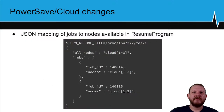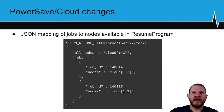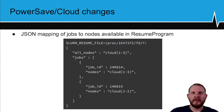We've also added a SLURM_RESUME_FILE environment variable. This points to a file in JSON format listing all jobs and the nodes allocated to that specific job, useful for records or reporting so you know exactly which node was allocated to which job.